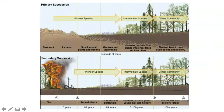Looking at the diagrams comparing primary and secondary succession: in primary succession, the first stage is pioneer species — lichens and moss — moving into the area and making soil, then grasses and flowers grow, and eventually trees return until a mature climax community is reached. In secondary succession, plants come back right away because soil is already there, so it's a much quicker process.